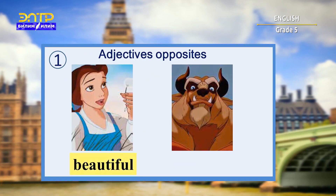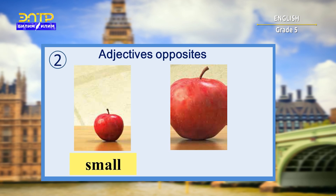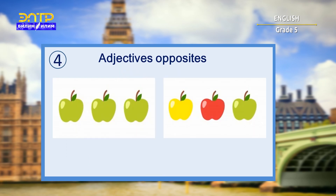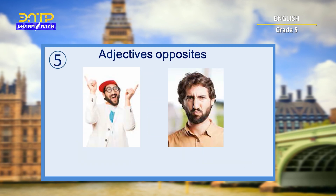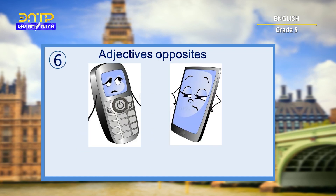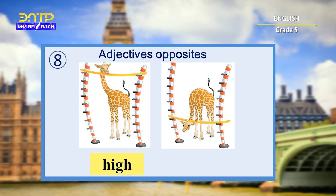What's the opposite of beautiful? It's ugly. Small — big. Old — young. Same — different. Funny — serious. Dry — wet. Old — new. High — low.